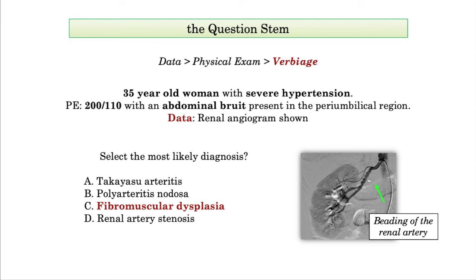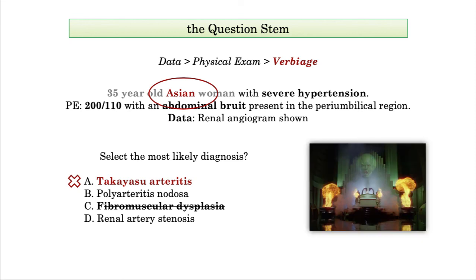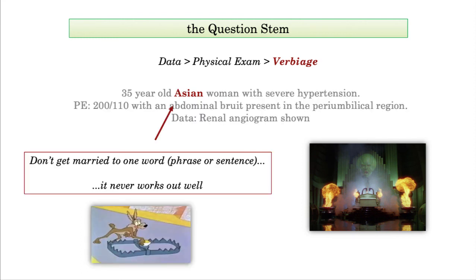But when the question writer alters the verbiage with a single word, that is, she is now an Asian woman, students completely lose their minds. They toss out the data in favor of the verbiage, and the game is lost. They take the bait, hook, line, and sinker. This is the game the NBME plays so effectively. They sow division in the ranks, and it gives rise to another recurring theme and corollary: don't get married to one word, one phrase, or one sentence. It never works out. We'll practice avoiding this trap when reviewing strategies and approaches to the answer options.